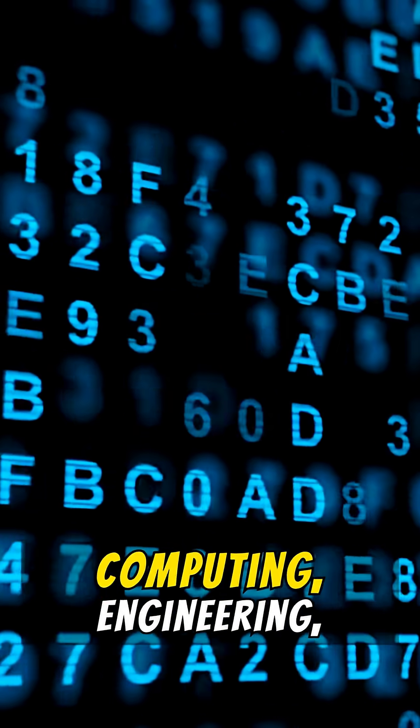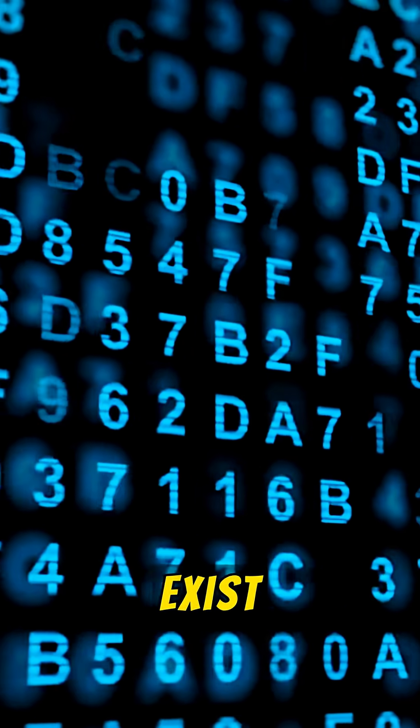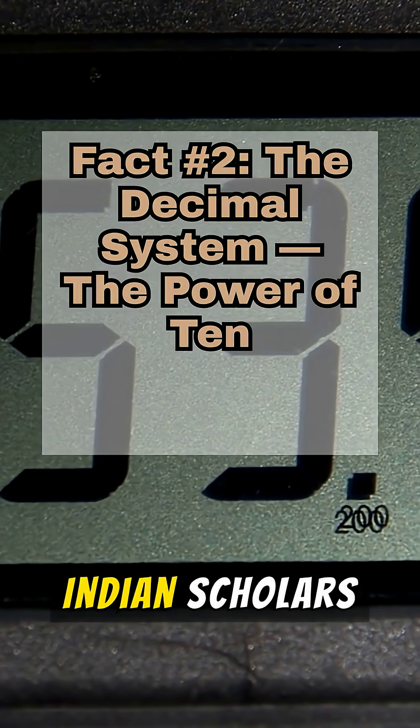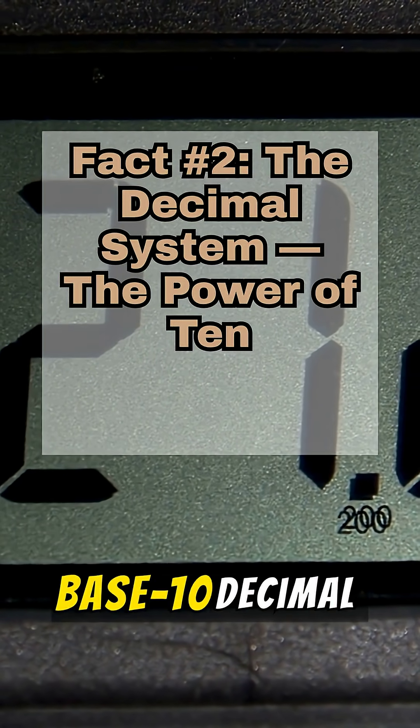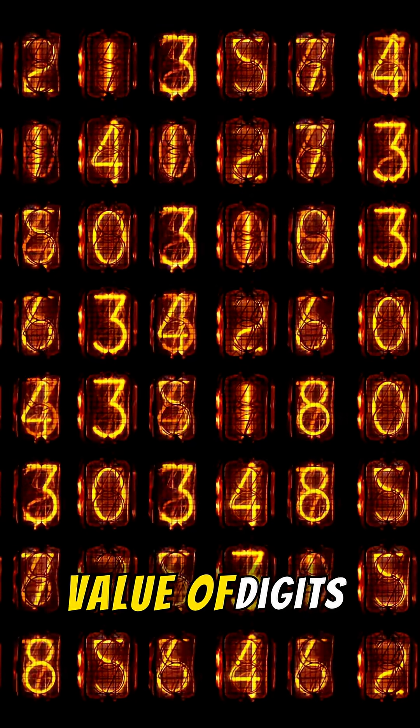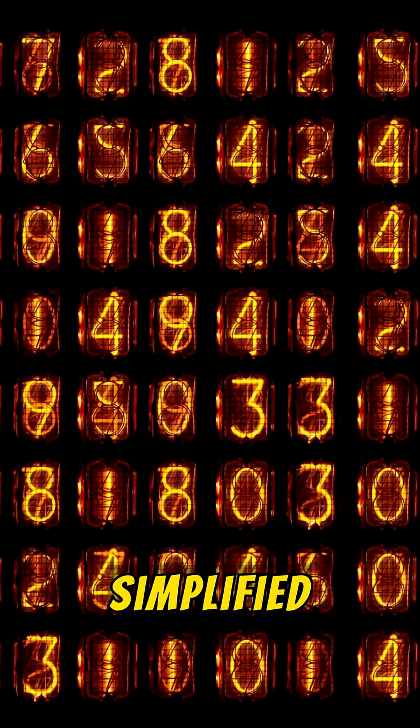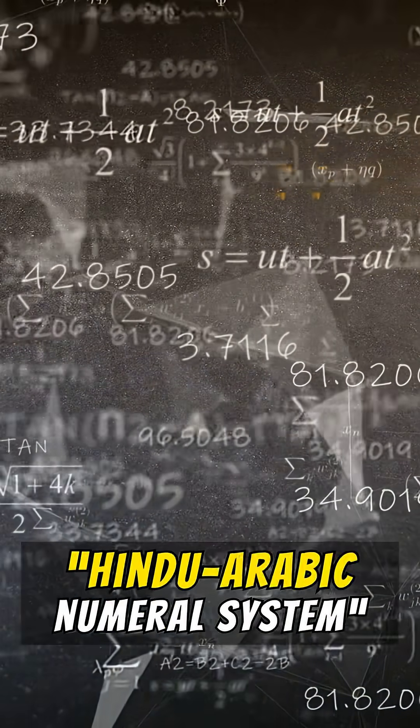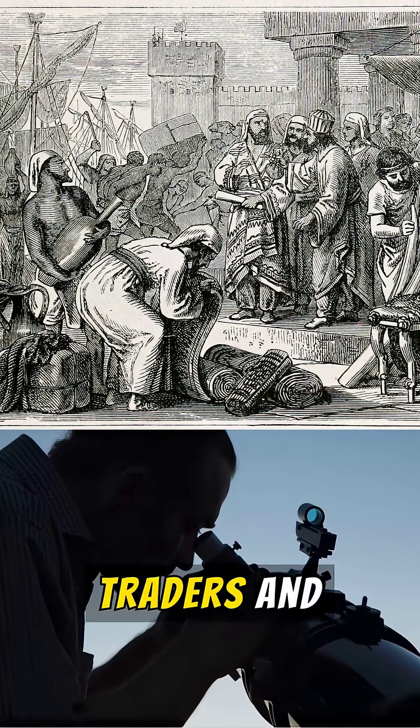Without zero, modern computing, engineering, and physics wouldn't exist. While other civilizations used clunky numeral systems, Indian scholars created the base-ten decimal system. This positional notation, where the value of digits depends on their place, simplified arithmetic and allowed massive calculations, called the Hindu-Arabic numeral system, used by traders and astronomers.